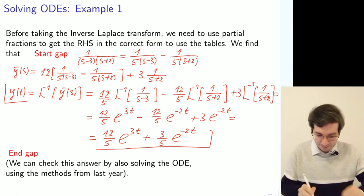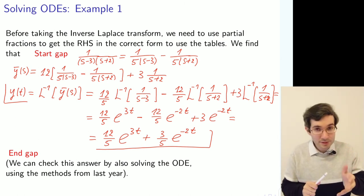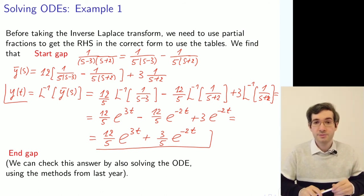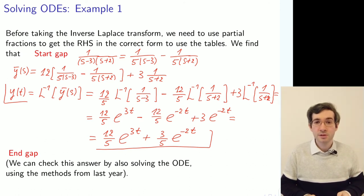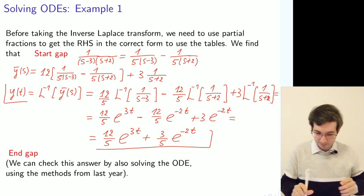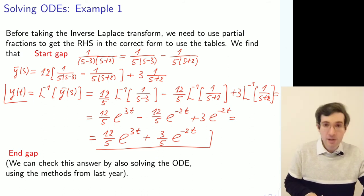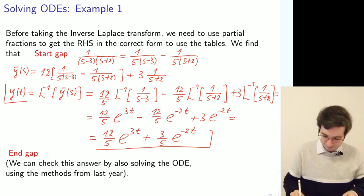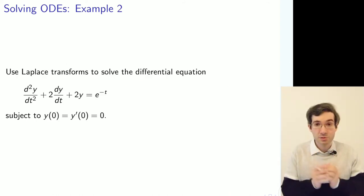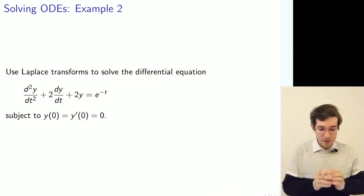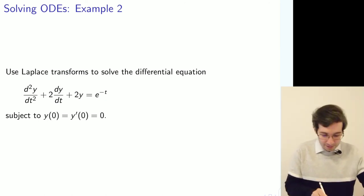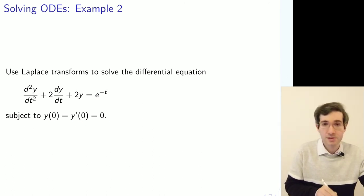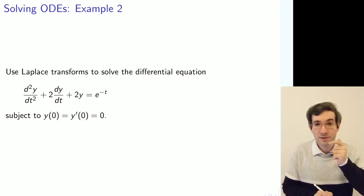We could have also solved it using conventional tools from a previous course. Now let's look at another example — a second order differential equation, which involves a second order derivative, a first order derivative, the function itself, and a right-hand side. This time we're given two initial conditions: the value of the function itself and the value of its derivative, both zero at time zero.